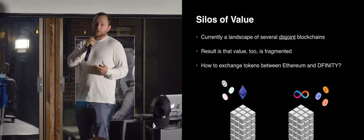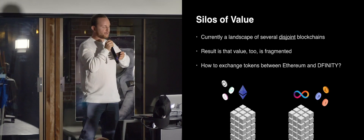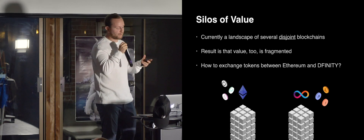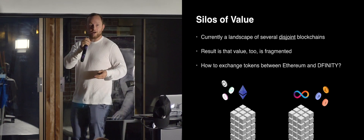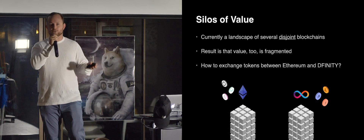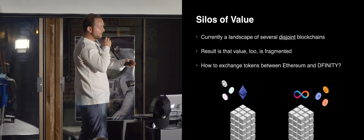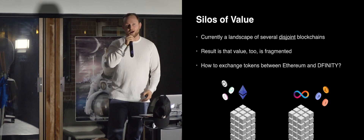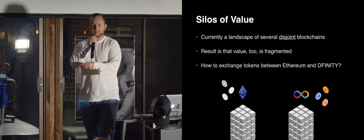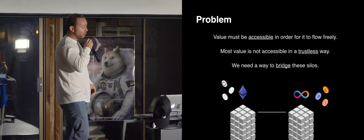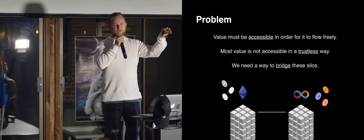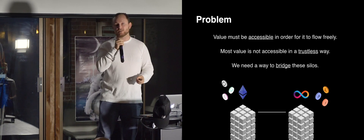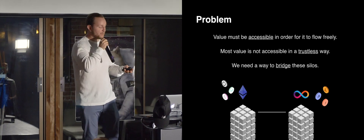The problem is that in the current landscape we have several disjoint blockchains, and as a result the value too is fragmented. The question becomes: if value needs to flow, how can we enable it to flow between platforms, between chains? If we have tokens on DFINITY and tokens on Ethereum, how can we allow them to flow from one to the other? To formalize this: value must be accessible in order to flow, but most value is not accessible in a trustless way, and we need a way to bridge these silos.